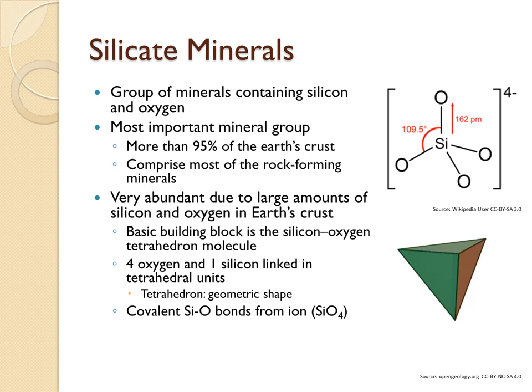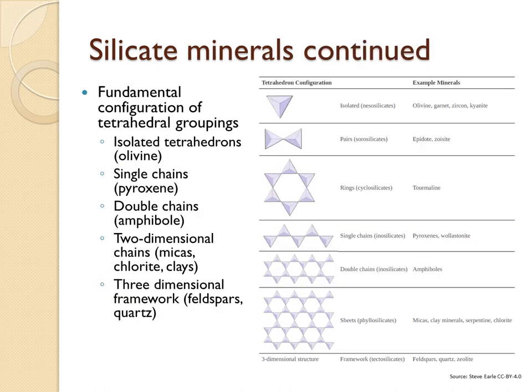A tetrahedron is made up of one silicon atom and four oxygen atoms that come together to form a pyramid-like shape. These pyramids then come together and stack up to form the various types of silicate minerals. In this table you can see that this arrangement is either a single tetrahedron, a single-chain tetrahedron, a double-chain tetrahedron, a sheet-like chain of tetrahedrons, or a framework of tetrahedrons.